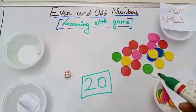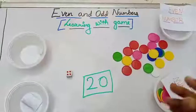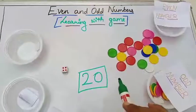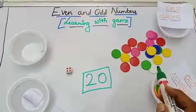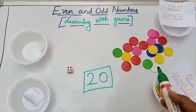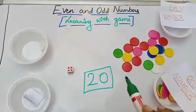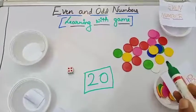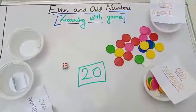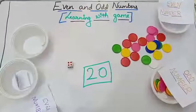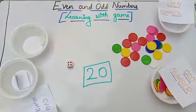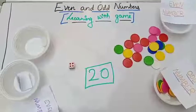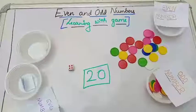That means we won the game! This is very interesting — by playing this game we can learn even and odd numbers easily. Try this game with your family and friends. You can enjoy learning even and odd numbers by playing a game. Have fun, children — see you in the next class. Take care and bye bye!